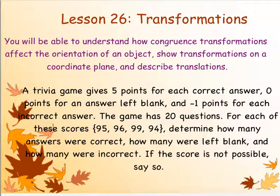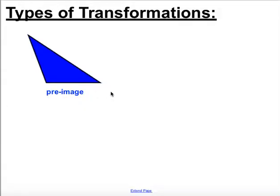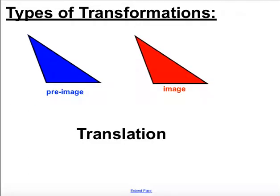Course 3, Lesson 26. We are looking at our different transformations and how they show up on our graphs and also in our different rules for our transformations. Our first figure is called a pre-image. Once we actually transform it, it becomes an image. A translation is one of our transformations — that is when we slide something, and that can go left to right, up or down, or even diagonally.